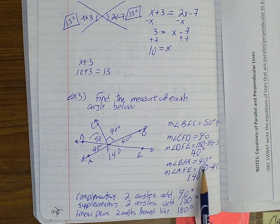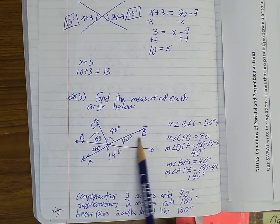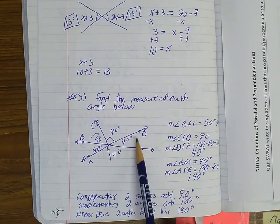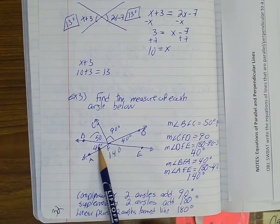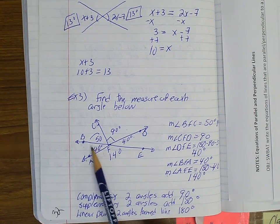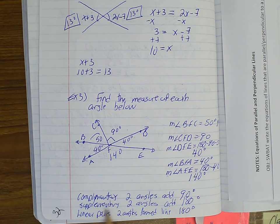And then AFE - so this is the line here. I could do 180 - 40 to give me 140, and then obviously this would have to be 40, because 140 + 40 gives you 180.